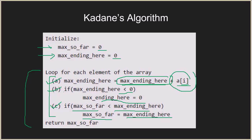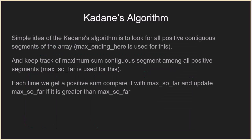After doing these three steps for all elements, we return the value of max_so_far. The simple idea of Kadane's algorithm is to look for all positive contiguous segments of the array — max_ending_here is used for that. We keep track of the maximum sum contiguous segment among all positive segments using max_so_far, updating it at every step. Each time we get a positive sum, we compare it with max_so_far and update if it is greater.